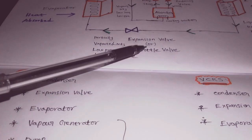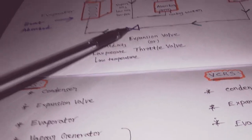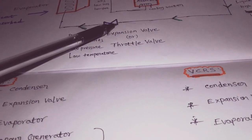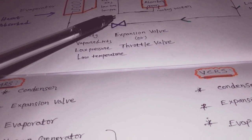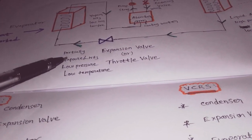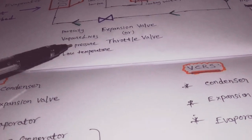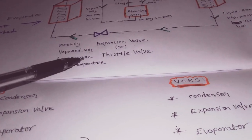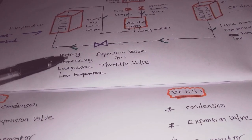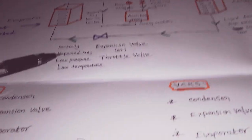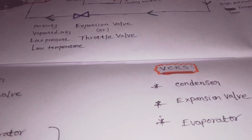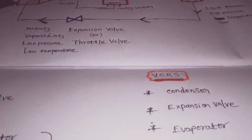The liquid ammonia at high pressure and low temperature then comes to the expansion valve, where the pressure drops and reduces. After passing through the expansion valve, the ammonia becomes partially evaporated — at low pressure and low temperature.